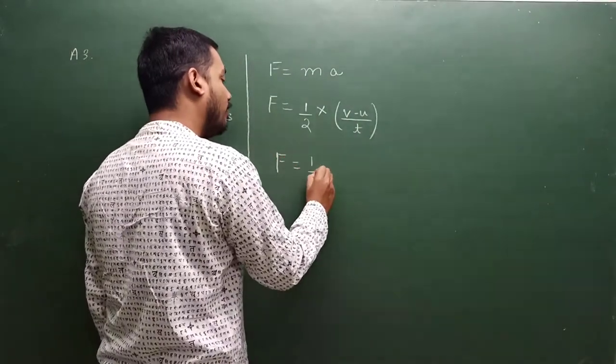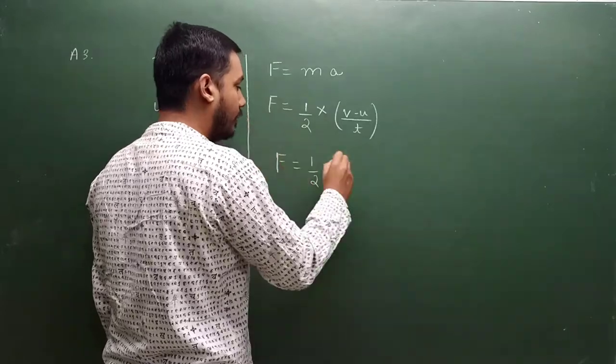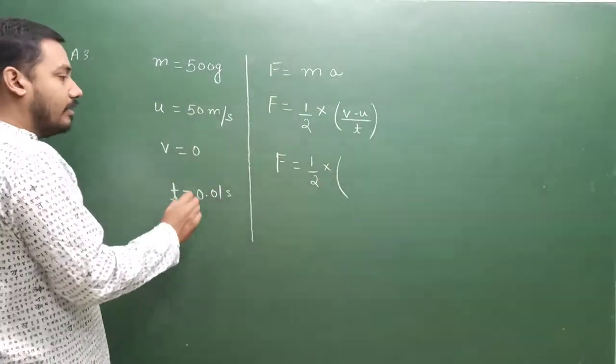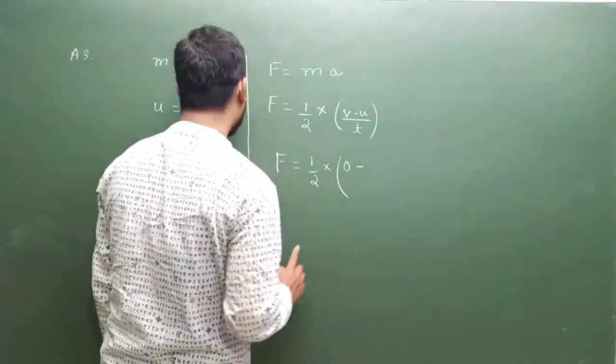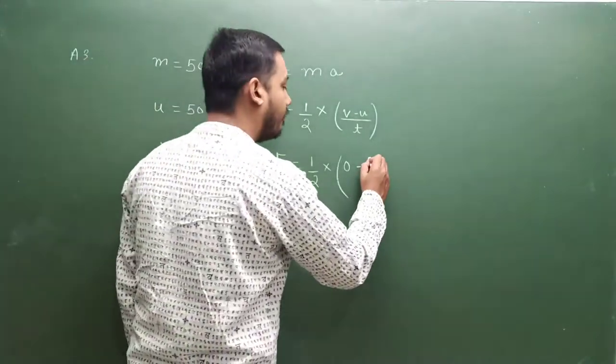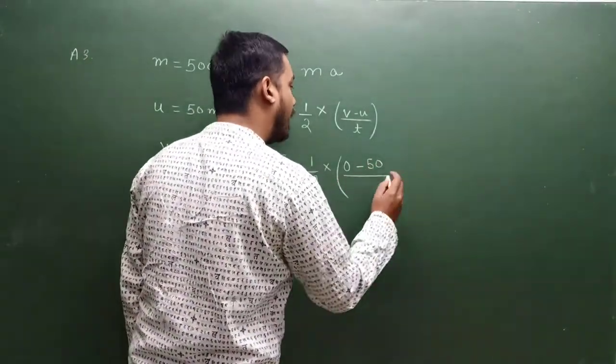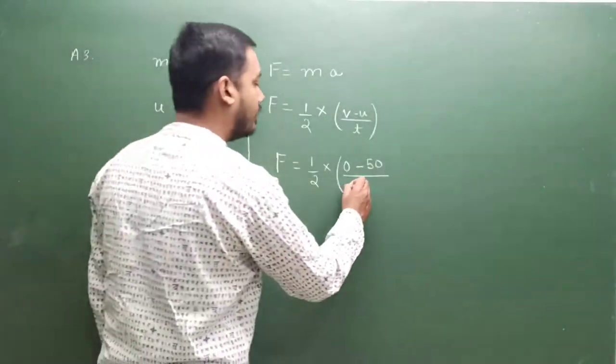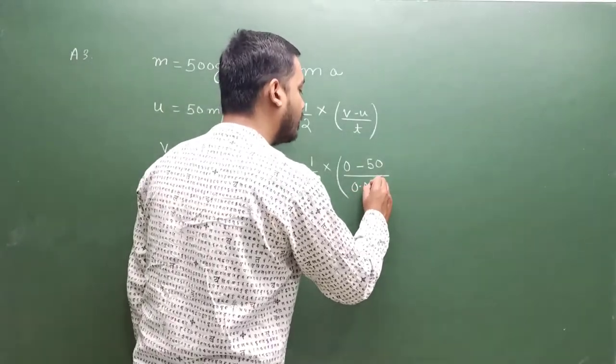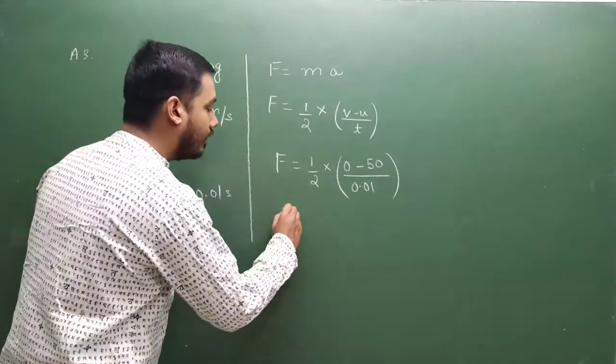F is equal to half of, v kitna diya hai? 0. u kitna diya hai? 50. By t, time kitna diya hai? 0.01. F aa gaya.